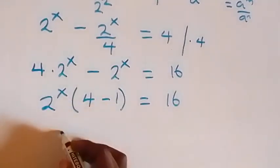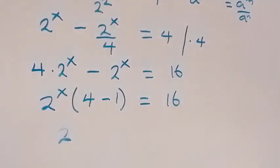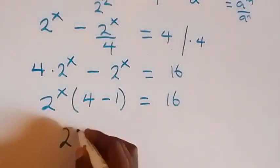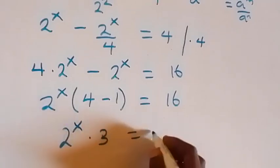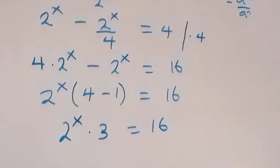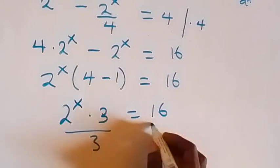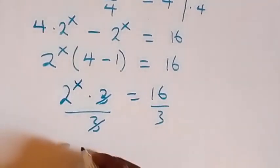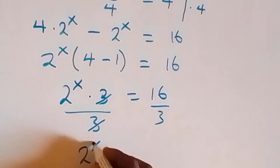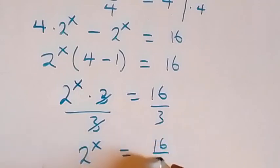4 minus 1 here is 3, so we have 2 raised to power x times 3 equals to 16. From here, we can divide both sides by 3, so that 3 cancels. Then we have 2 raised to power x equals to 16 over 3.